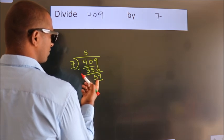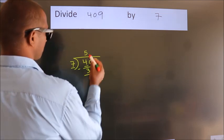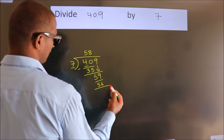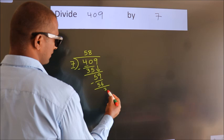A number close to 59 in 7 table is 7, 8, 56. Now we subtract. We get 3.